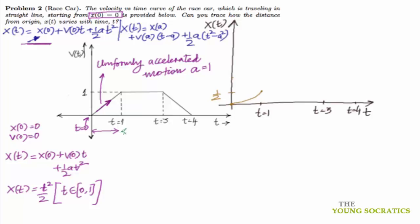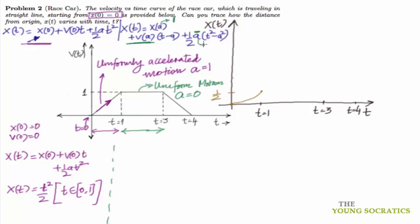Now let's see what happens between t = 1 and t = 3. In this interval the v(t) curve is again a straight line, so this is uniform motion, meaning acceleration is 0. We use the shifted formula with initial time a̅ = 1. Note: don't confuse the acceleration a̅ with the initial time value a̅ — the acceleration here is 0, and the initial time value is 1.